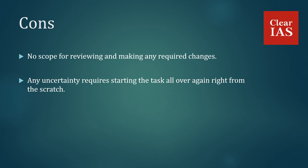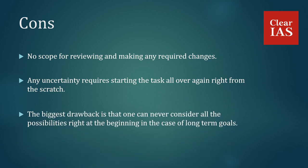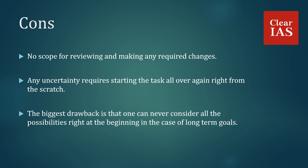Consider the case of 5-year plans in India. Every 5-year plan in India is fixed or framed around a particular agenda and has a central theme. All the policies are framed around this theme to achieve it. When any uncertainty crops in between, you cannot change or tamper with the goal of the 5-year plan. The biggest drawback is that one can never consider all the possibilities at the beginning in the case of long-term goals, as one can never predict the uncertainties beforehand.